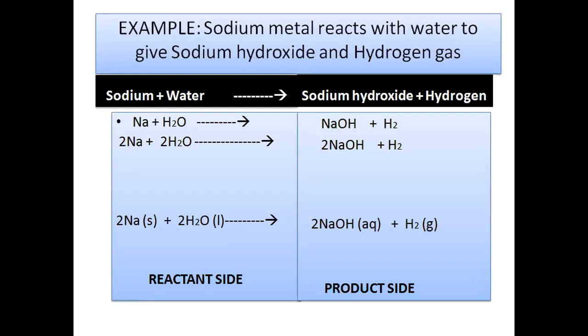To balance hydrogen, we multiply the water molecule by 2 on the reactant side and sodium hydroxide by 2 on the product side. After multiplying, hydrogen atoms total four on the reactant side and four on the product side — balanced. Oxygen atoms are two on each side — balanced. The coefficient of 2 added to sodium hydroxide makes sodium atoms equal to 2, so we also multiply the reactant side sodium by 2.